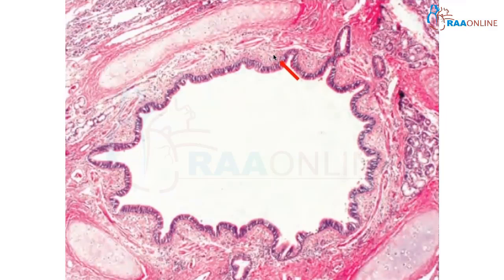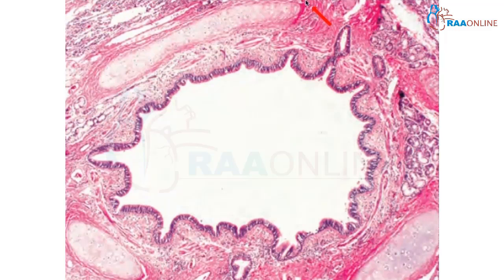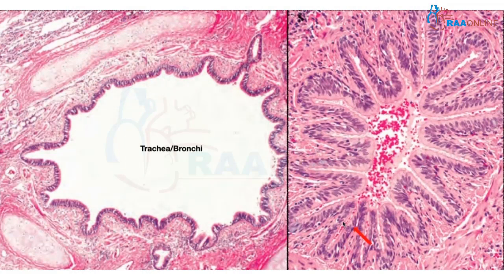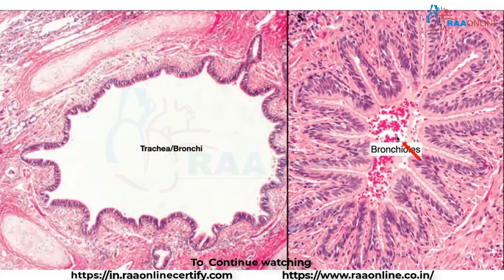Looking at the cross-section of the trachea or bronchi: they have cartilage, a pseudostratified ciliated lining epithelium, lamina propria, submucosa, and muscularis. In the posterior wall, cartilage is deficient and there are salivary-type glands — these are the origin of salivary gland-type tumors in the trachea, bronchi, or central lung. In bronchioles, cartilage is absent, so the mucosa is thrown into stellate-shaped corrugations. You should be able to differentiate trachea and bronchi from bronchioles by the absence of cartilage.